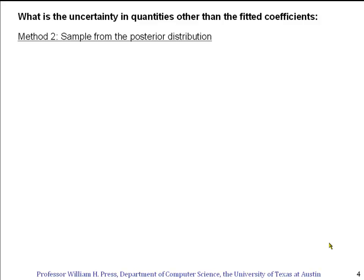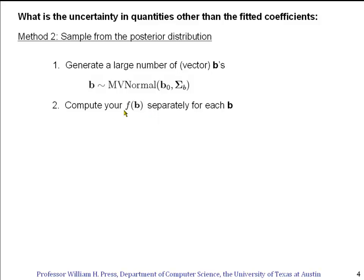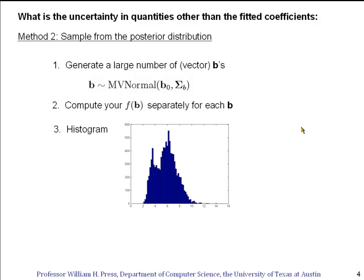Now I want to tell you a completely different way of doing the same calculation. This is a more modern, because more computational, way of doing it. And it also generalizes in some very important ways that we're going to see later in the course. This is called sampling from the posterior distribution. Well, we're interested in what is the distribution of fitted parameters b's. And we already know that it's centered on b0, and it's a multivariate normal with covariance matrix sigma b. So why don't we just generate a lot of b's, draw a lot of random deviates b's from this distribution. And then from each one, we'll compute the function of interest, f(b).